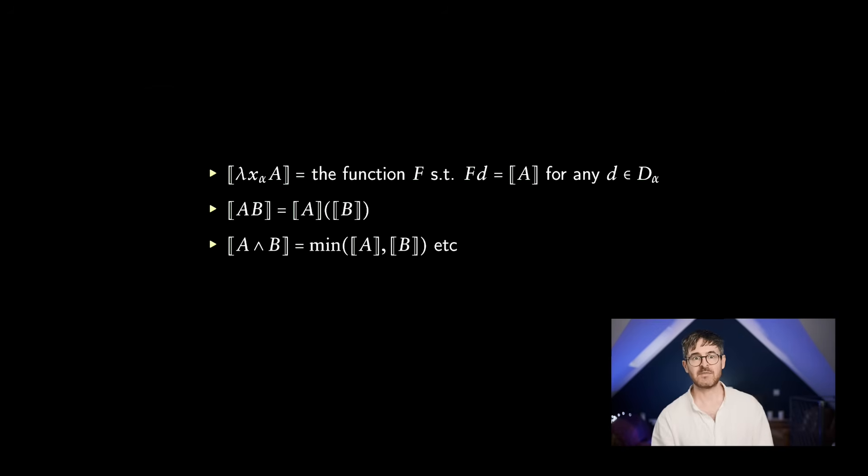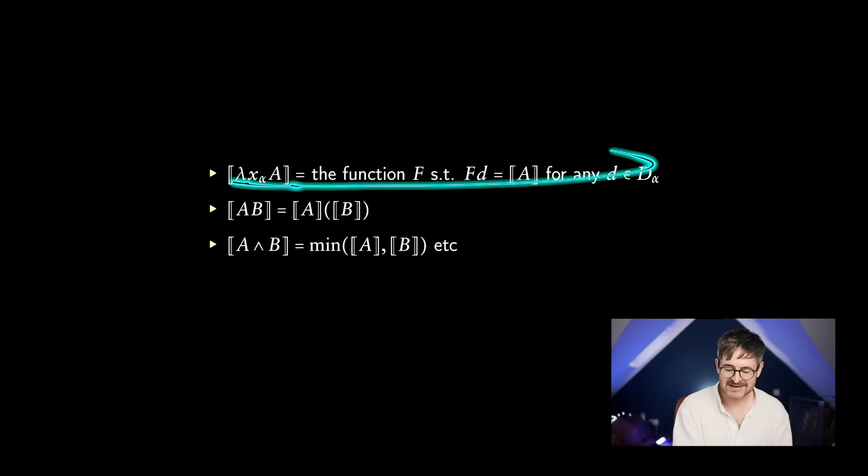So what is the denotation of a lambda abstract going to be? Well, we want it to be a function. We want this to be a function that takes in things of type and gives us back something in the domain of the type of whatever A is. So this is going to be the function such that if you put in any D from the domain of A, it's going to give you the denotation of A. That is quite a mouthful. But if you work your way through that definition, it's basically just saying it's the function it should be. It's the function from things of type alpha such that you put in any one of those things in, and it's going to give you back the denotation, the meaning of A relative to that input. I am being a little bit sloppy here because A might have some free variables in it, in which case we have to substitute into it. But rather than going into the whole business of variable assignments, let's just leave it as it's the function that we kind of expect it to be when we do a lambda abstraction.